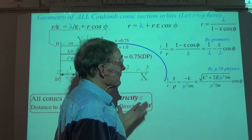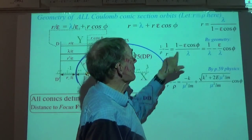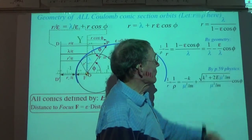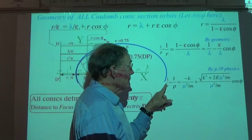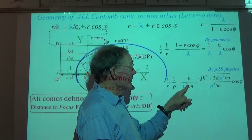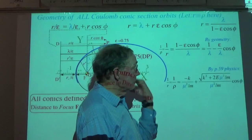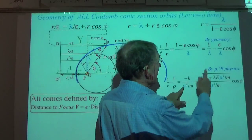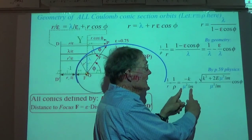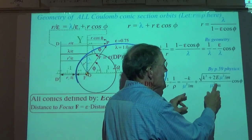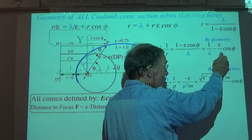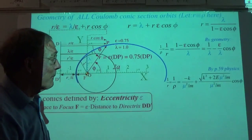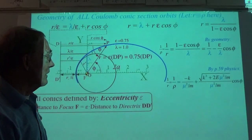1/r is equal to (1/λ)(1 − ε·cos(φ)). Now we have an equation for 1/r or 1/ρ. We match this to the physics result from a few pages back. Right away we can see what lambda is, but we still need to sort out what epsilon will be — epsilon is a little more complicated.